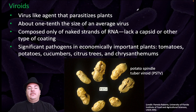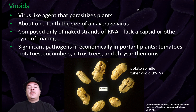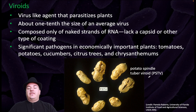We can also have viroids — a virus-like agent that is a parasite of plants. It's about one-tenth the size of an average virus, composed only of naked strands of RNA, and lacks a capsid or other type of coating. It's a significant pathogen in economically important plants like tomatoes, potatoes, cucumbers, and citrus trees. Here's an example of potato spindle tuber viroid infecting potatoes.